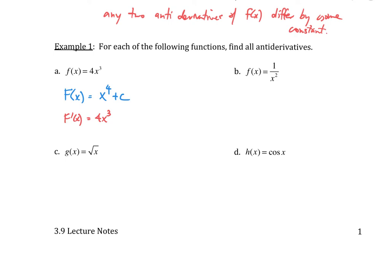Example B: we rewrite 1 over x squared as x to the negative 2. Then capital F of x equals x to the negative 1 divided by negative 1, plus c. Taking the derivative: the negative 1 exponent comes down, negative 1 divided by negative 1 is 1, and subtracting 1 from the exponent gives x to the negative 2. The derivative of c is 0, so the derivative of capital F is just x to the negative 2.